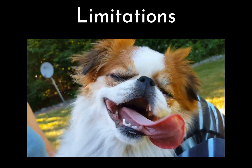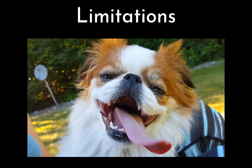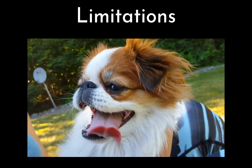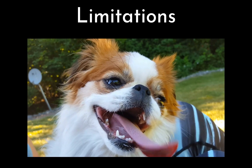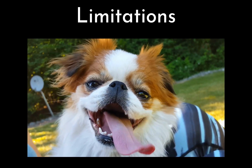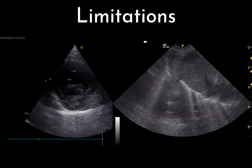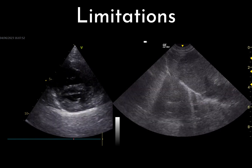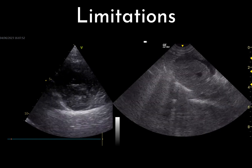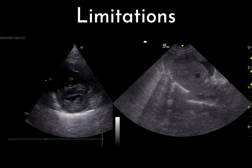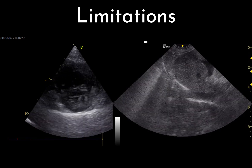Second, since CVC collapse depends on intrathoracic pressure drops, shallow breathing or panting may lead to a lack of collapse even in the presence of hypovolemia or volume depletion. Third, if the patient has increased right atrial pressure due to right-sided heart failure, this will also result in a lack of collapse despite the presence of hypovolemia.